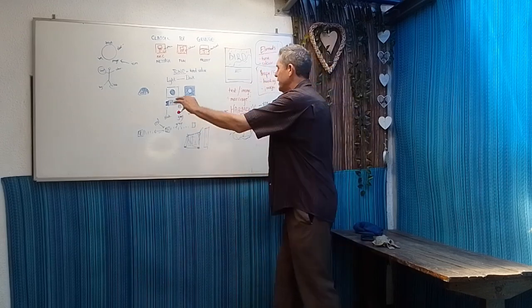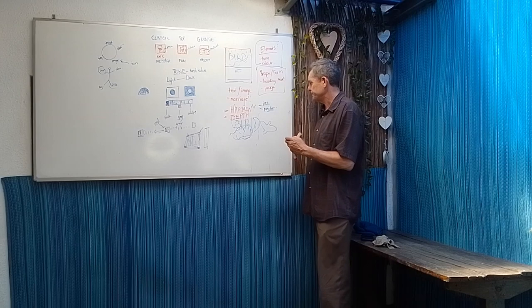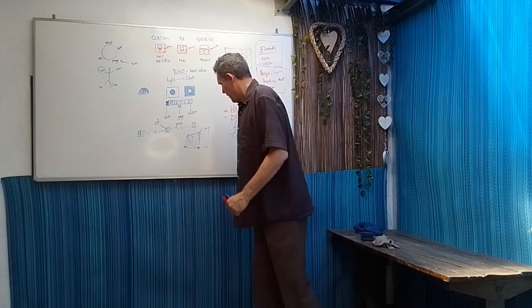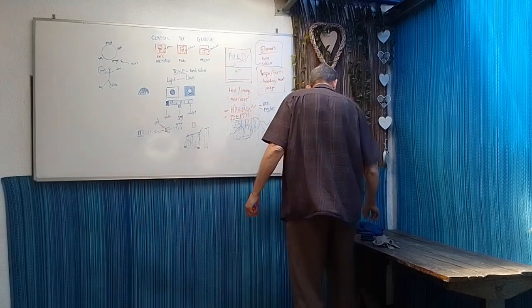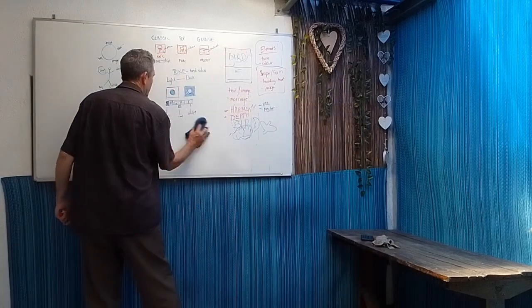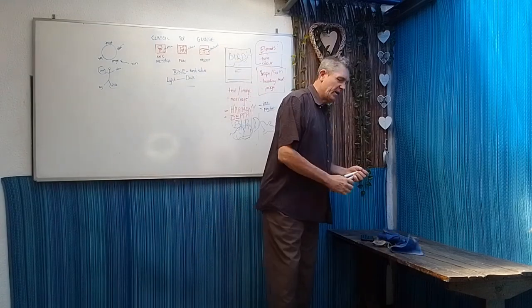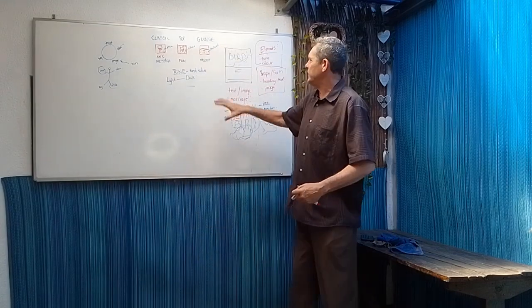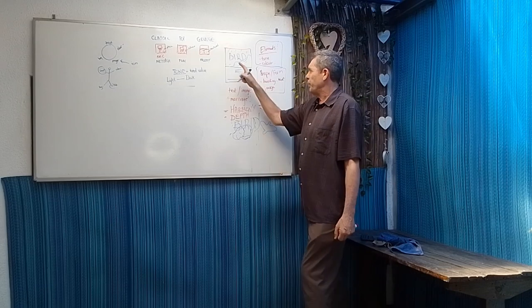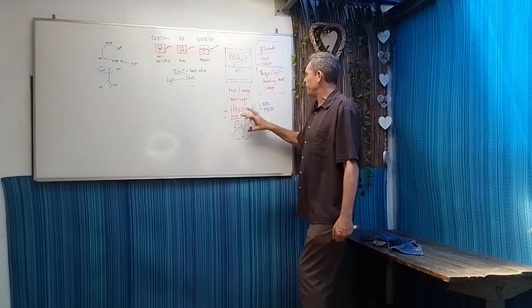Now, how does tone affect harmony and depth? The easiest way to create harmony is to pick out the dominant color in your photograph. Then choose either black or white for text — both will work — but to create a little bit of harmony, you can bring a tone that's dominant in the picture into your heading.